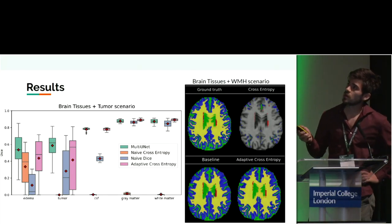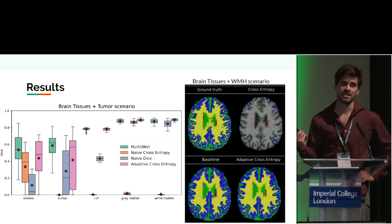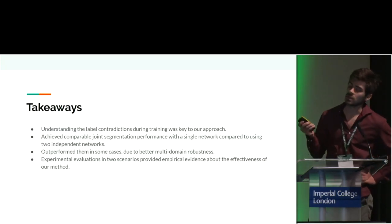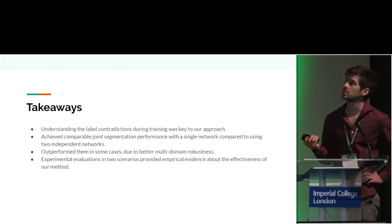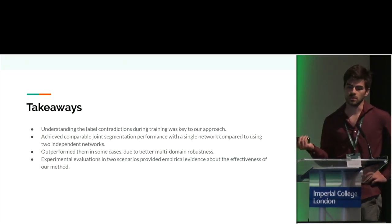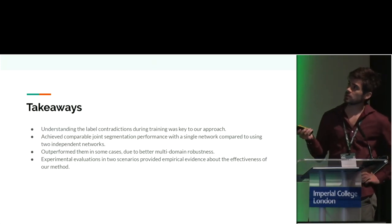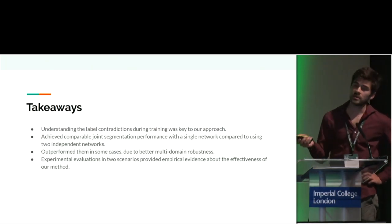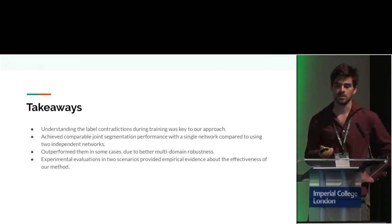In some cases we even managed to outperform the two-network approach, because our single network trains on two different datasets making it more robust to domain changes. Key takeaways: we identified the contradictions occurring during training, achieved comparable segmentation with a single network versus two separate networks, and even outperformed them in some cases due to better multi-domain robustness. We validated this on two scenarios — white matter hyperintensities and tumors — with consistent results in both cases.